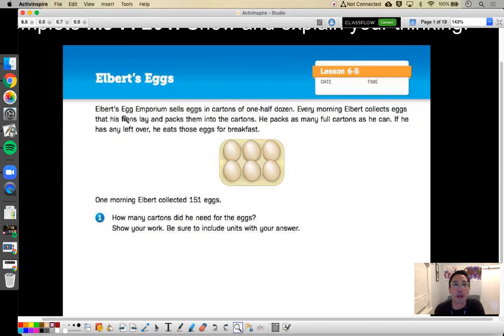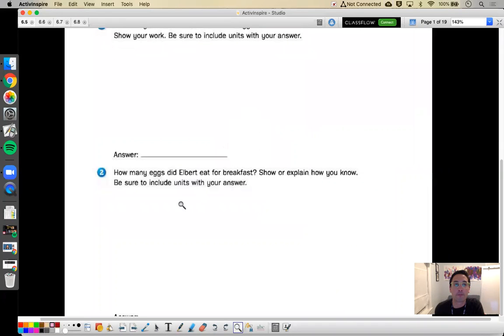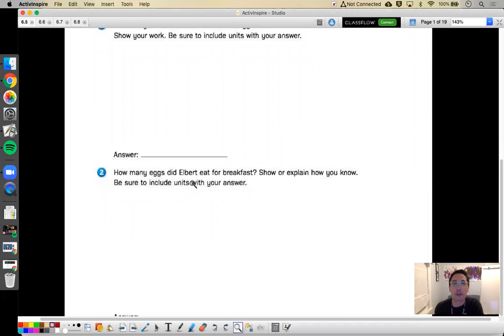So the problem says, Egbert's egg emporium sells eggs in cartons of one half dozen. Every morning, Egbert collects eggs that his hens lay and packs them into cartons. He packs as many full cartons as he can. If he has any leftover, he eats those for breakfast. One morning, Egbert collected 151 eggs. How many cartons did he need for the eggs? Show your work. Be sure to include units in your answer. And then how many eggs did Egbert eat for breakfast? Show or explain how you know.